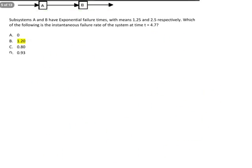This is question number 21 from the mid-semester exam, and we're trying to calculate the instantaneous failure rate of this series system. Subsystems A and B have exponential failure times with means of 1.25 and 2.5 respectively. Remembering that means we've got lambda A is equal to 1 over 1.25 and lambda B is equal to 1 over 2.5.